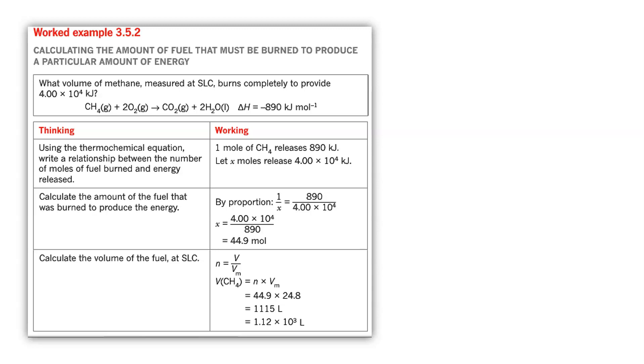Now this is the other way. So we looked at how much energy would be produced from burning a fuel. Now we need to work out how much fuel would be required to get a particular amount of energy. Again, we're looking at the combustion of methane. This time the question says what volume of methane? Remembering that methane is going to be a gas. So we're going to be using our gas equations here. So gas measured at SLC, so VM will come into play, burns completely to provide 4 times 10 to the 4 kilojoules. This is the correct unit that we need to use and we've been given this equation here. We can see that the coefficient of 1 is in front of our CH4, so I don't have to do anything to my delta H.